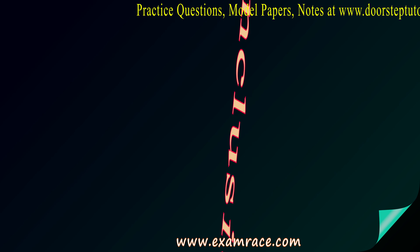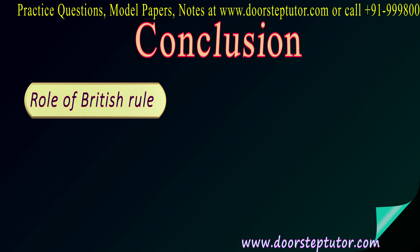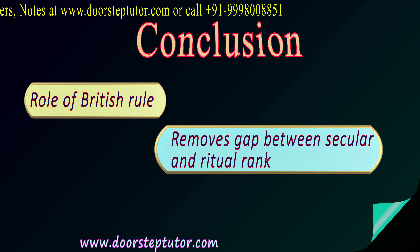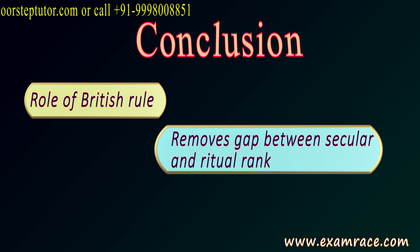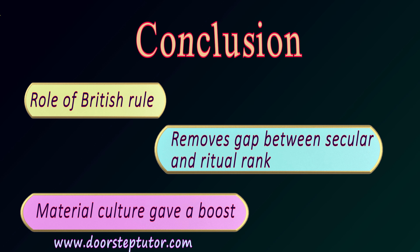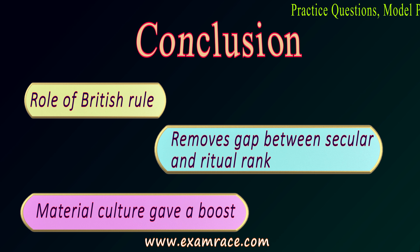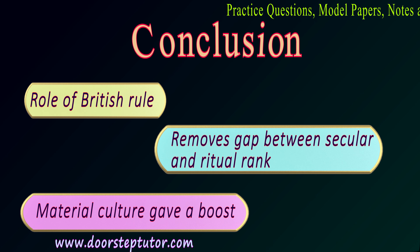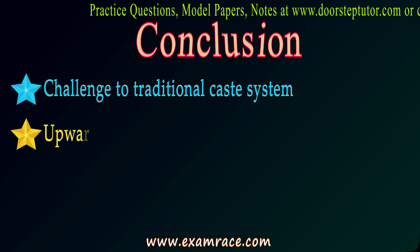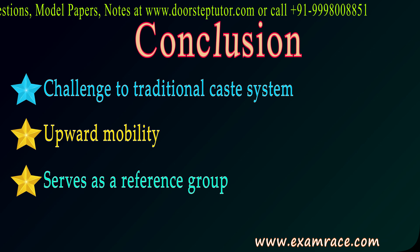In conclusion, Sanskritization has a role of British rule, as the British reinforced the upper and lower caste psychology in India. It removes the gap between secular and ritual rank, because one becomes part of the group they aspire to. Material culture gave a boost — when higher caste people acquired material goods like cars and televisions, lower caste people felt motivated to emulate them. Sanskritization challenges the traditional caste system, involves upward mobility, and serves as a reference group theory, so please watch this lecture alongside the reference group video.